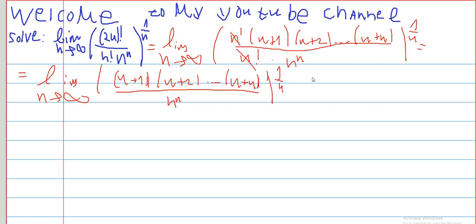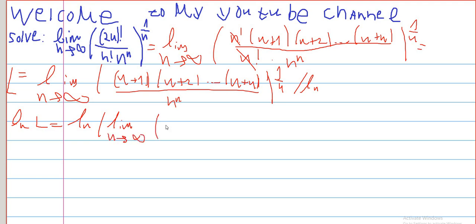I want to take the logarithm of this, so I will call this limit l and take ln on both sides. So I will have ln of l equals ln of the limit as n approaches infinity, and this is just a product as k goes from 1 to n of k plus n divided by n.